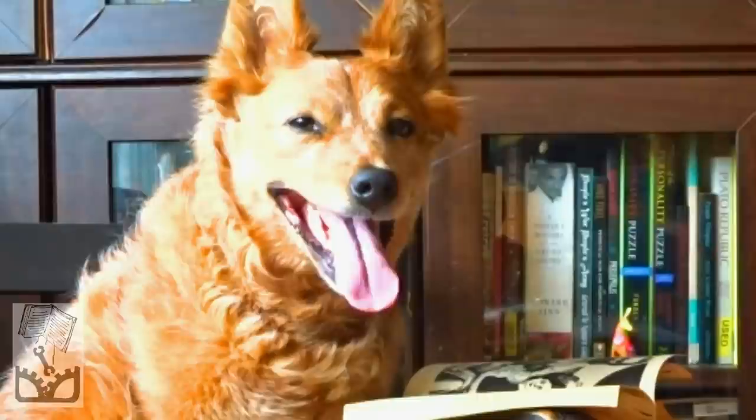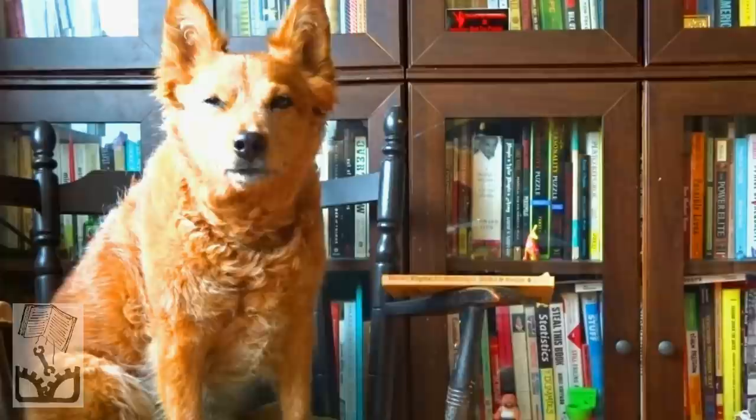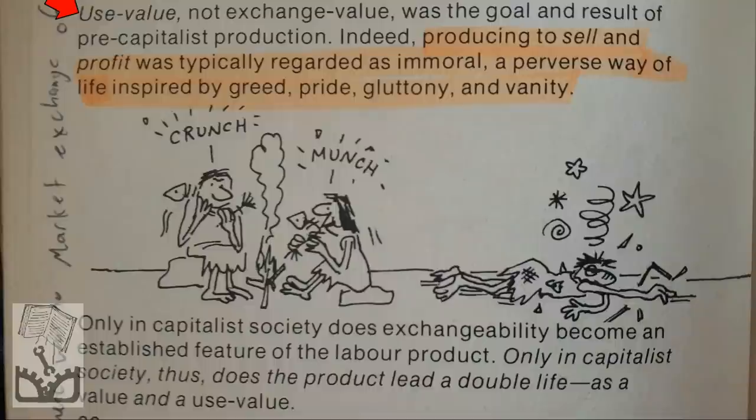Building on the concept of commodity, Chapter 2: Products for Use. Smith and Evans explain that with the development of capitalism, production moved from focusing on producing for use to producing for exchange. They state: 'Use value, not exchange value, was the goal and result of pre-capitalist production. Only in capitalist society does the product lead a double life — as a value and use value.'